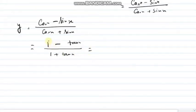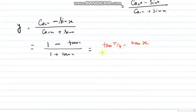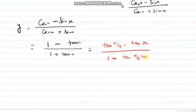If you divide by cos x, it becomes (1 minus tan x) divided by (1 plus tan x). Now we have to organize this to get the formula of tan(a minus b): tan a minus tan b over 1 plus tan a tan b. So 1 can be written as tan(π/4), and we get y = tan(π/4 minus x).